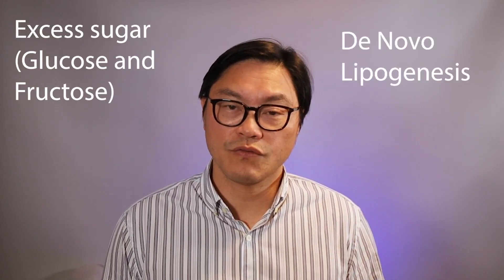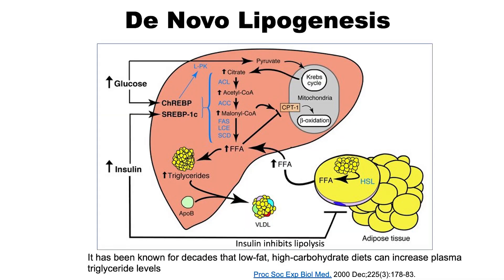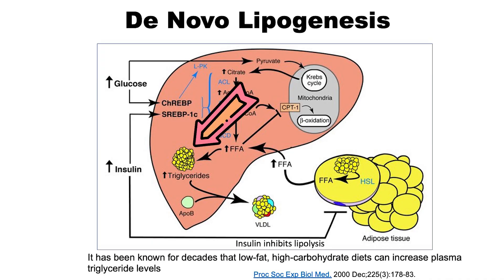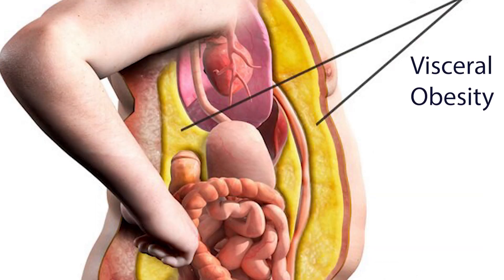But it's not simply weight gain — it tends to deposit in the abdominal area. This is because of de novo lipogenesis, which is the conversion of excess carbohydrates into fat. The liver takes those excess carbohydrates, turns them into fat, and the first place it deposits is within the liver and also within the abdominal organs. That's why you tend to get visceral obesity as opposed to overall obesity, and visceral obesity is measured by waist circumference.